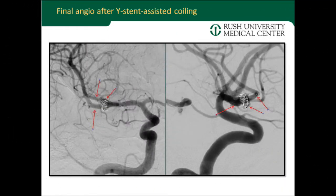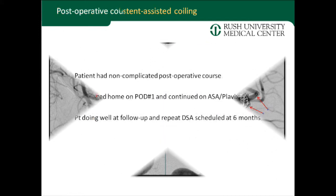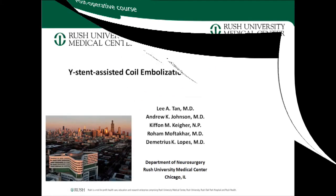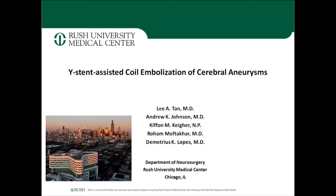The final angiographic view confirmed a good coil mass with reconstruction of the parent vessels. The arrows point to the stents as well as the coil mass. This patient did very well — no change in neurological exam, discharged the next day with a successful recovery. We feel this Y-stent construct has made a tremendous difference in our practice, and we recommend its use whenever bifurcation reconstruction is challenging. This is just the beginning of an area with tremendous potential as new devices become available.